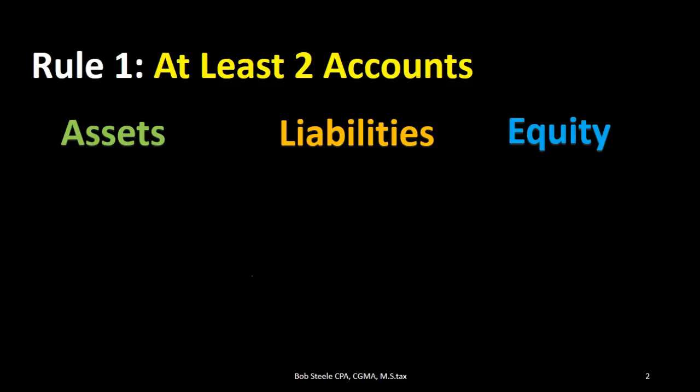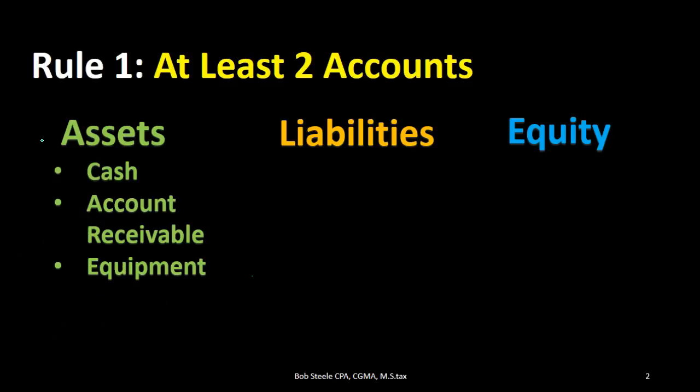Rule one: at least two accounts will be affected for every transaction. Whatever we are recording, there will be at least two accounts affected. When we look at the accounting equation we see assets, liabilities, and equity — those aren't actual accounts, those are account types. Within those account types we have the actual accounts. For example, under assets we have cash, accounts receivable, and equipment — those are asset-type accounts.